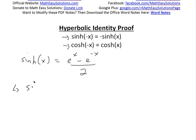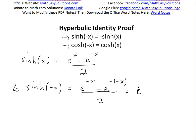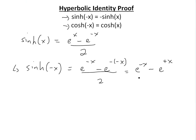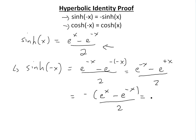If we just plug in negative x, the proof is pretty easy. We get e to the negative x minus e to the negative negative x, divided by 2. That becomes e to the negative x minus e to the positive x, divided by 2. If we factor out the negative, we get negative times e to the x minus e to the negative x, all divided by 2.